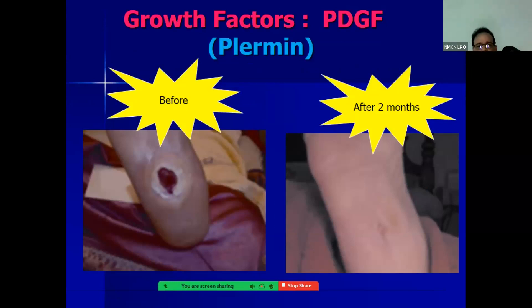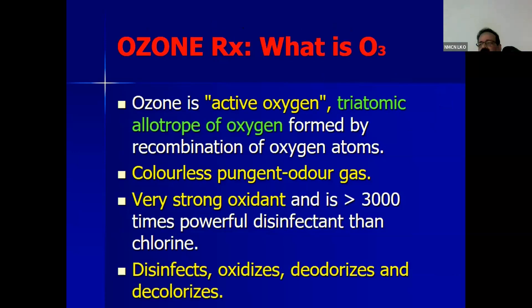This shows a wound before and after use of recombinant platelet-derived growth factor BV type. This is before and after two months of plaramine use.